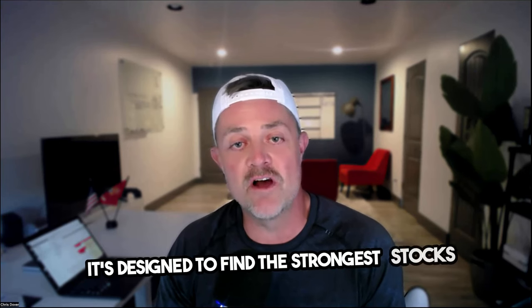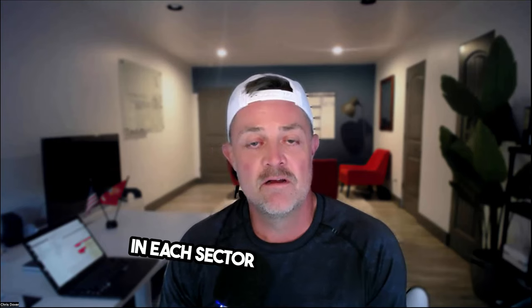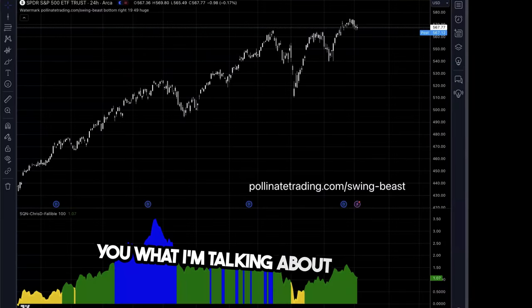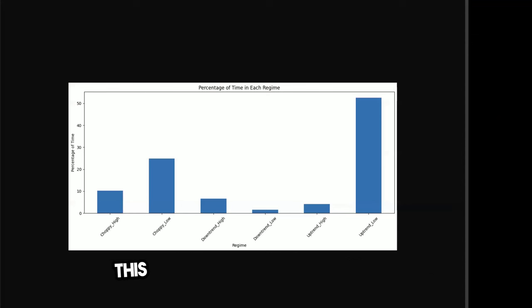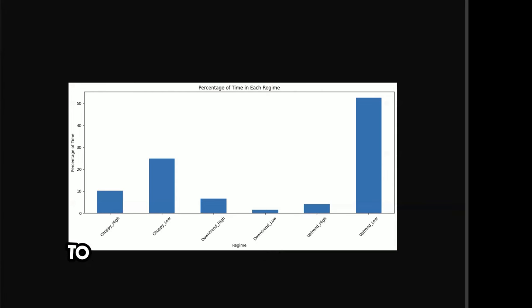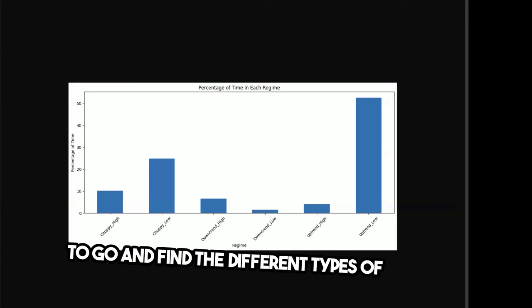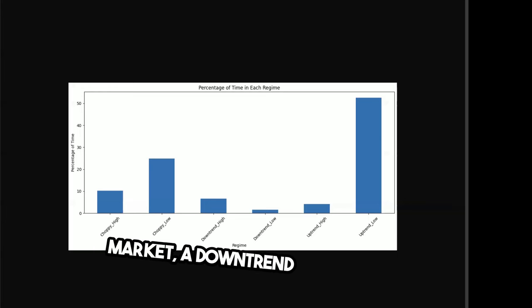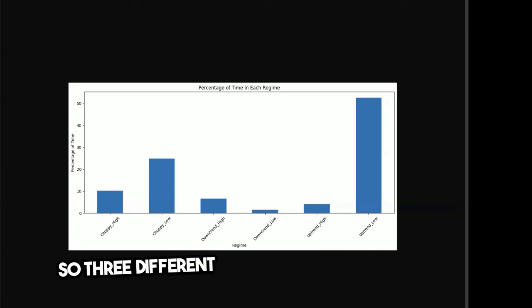The Swing B system is designed to find the strongest stocks in each sector and trade those. Let me show you what I'm talking about. This is a little tool I built in Python to find the different types of markets — basically whether you're in a choppy market, a downtrend, or an uptrend.